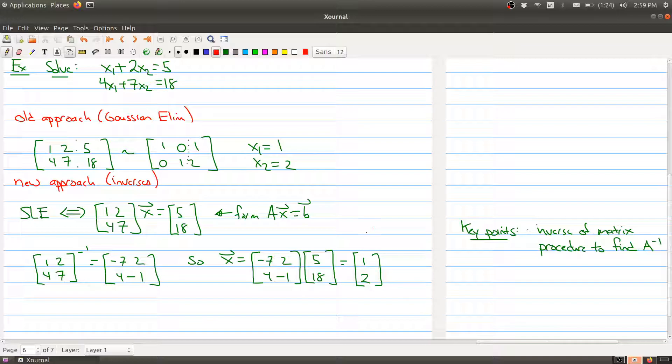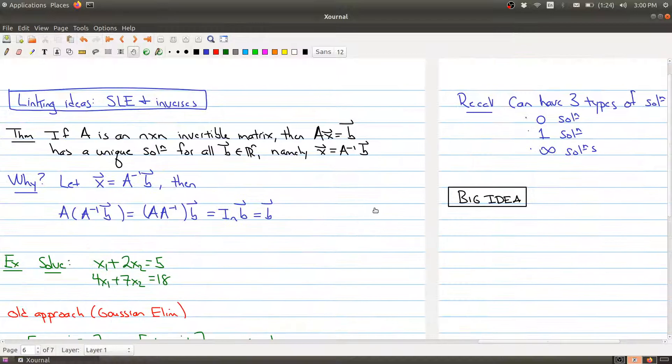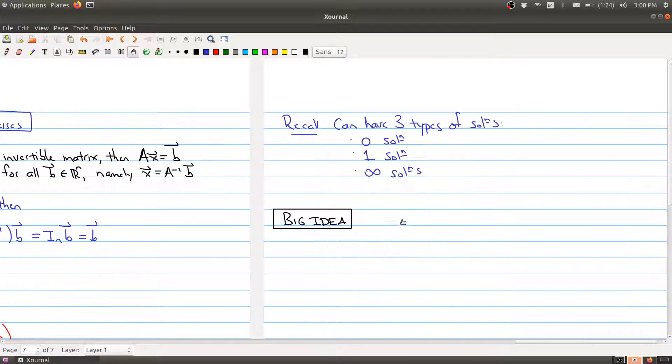So let's maybe highlight this. Same answer. So one used Gaussian elimination. The other uses the inverse of a matrix. We can say a little bit more here and hopefully give you the big idea of what's happening here.